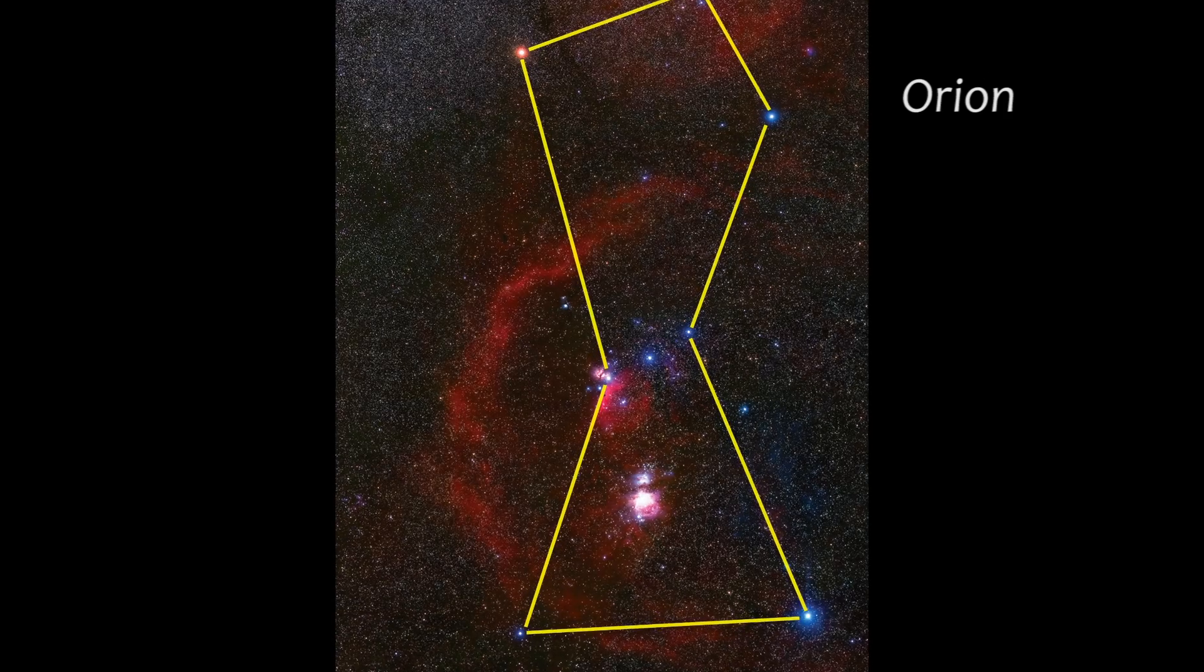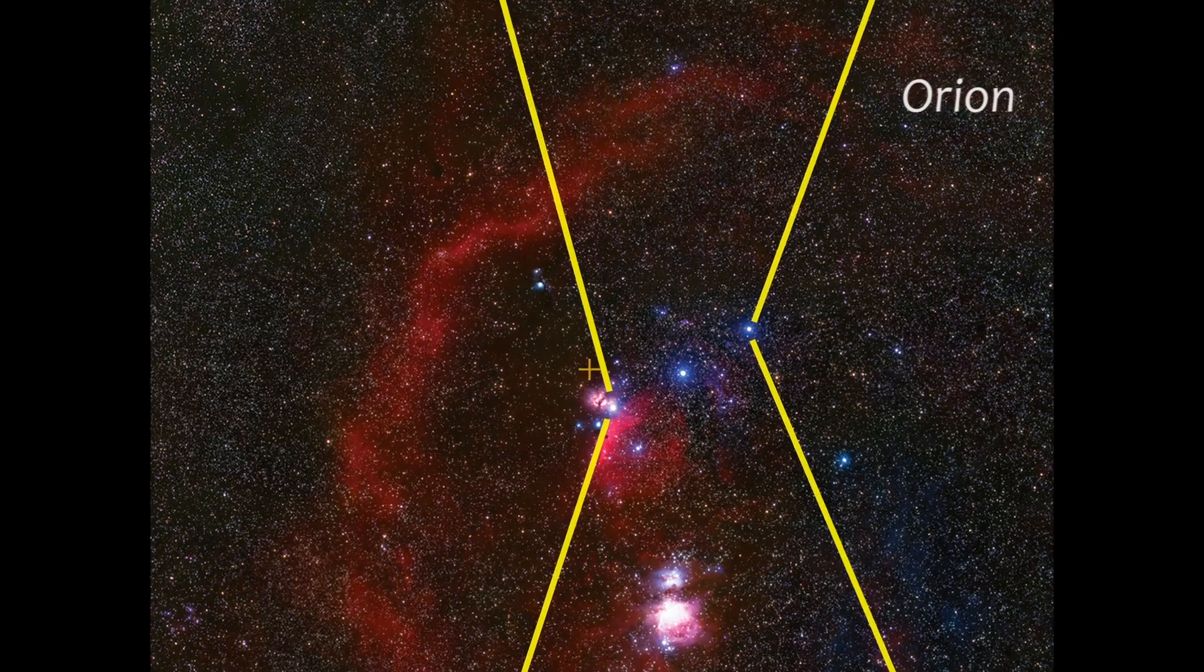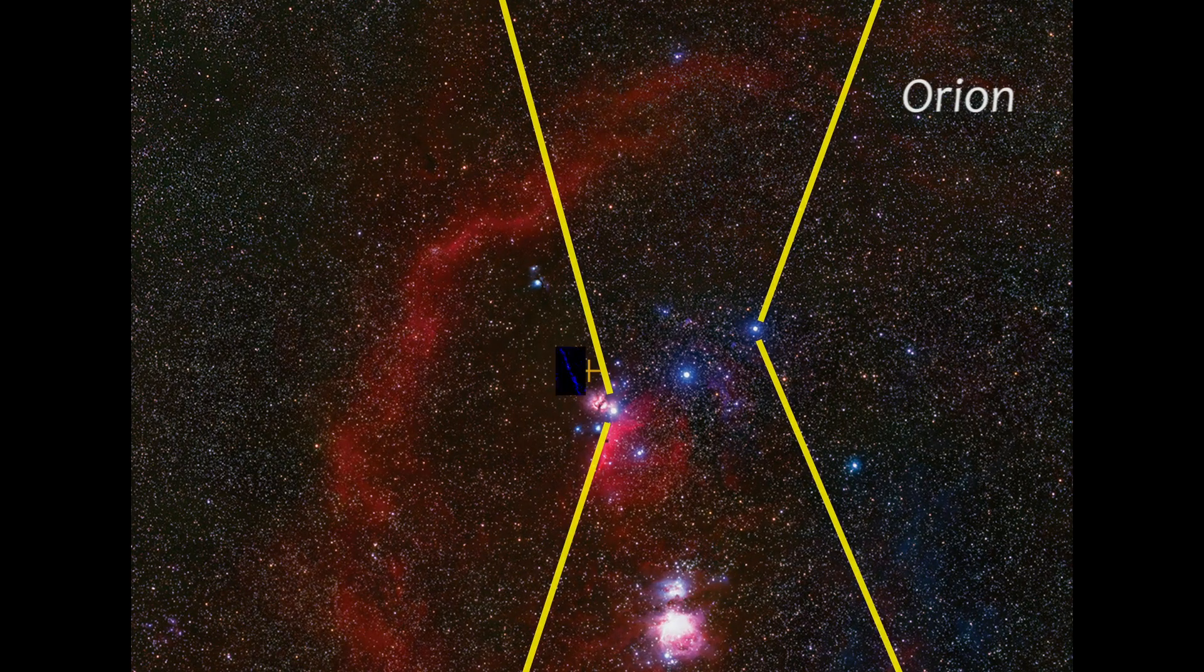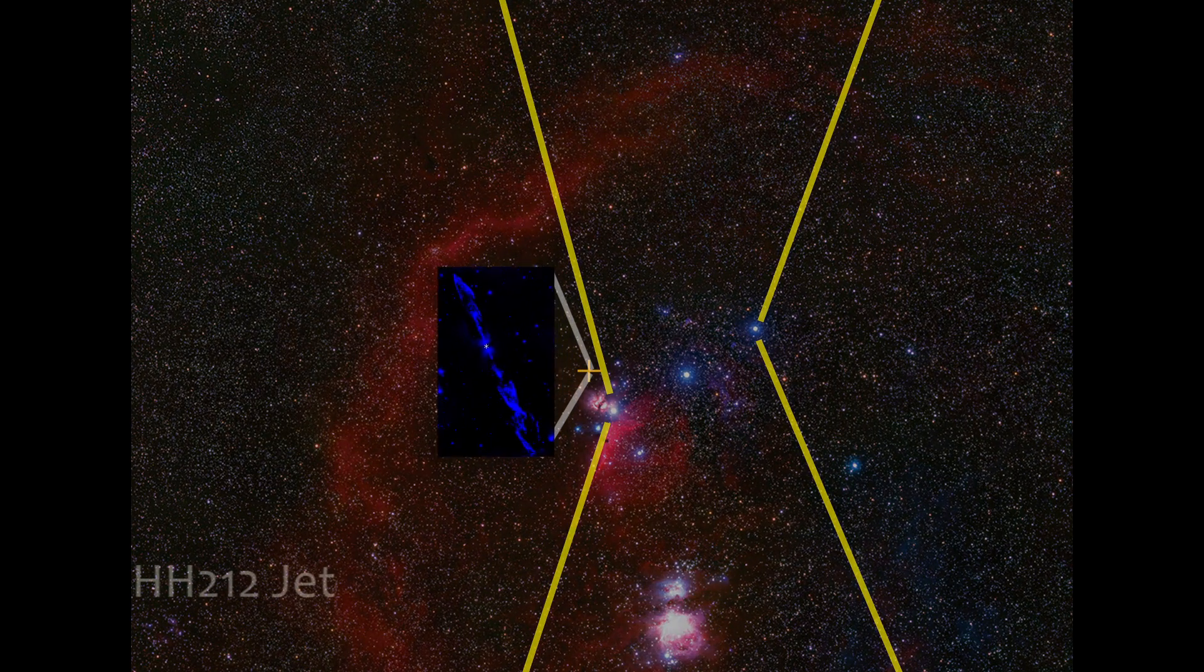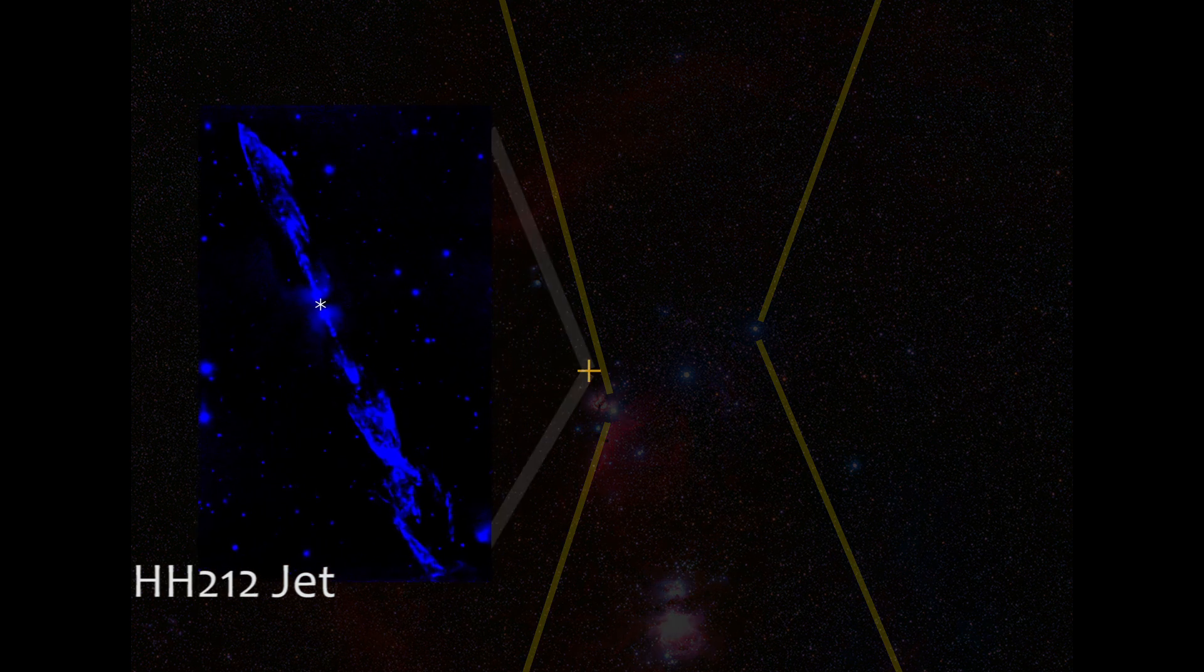HH-212 is a nearby star system about 1,300 light-years away in Orion. The central protostar, or forming star, in HH-212 is only about 40,000 years old. This protostar provides material for a powerful jet.